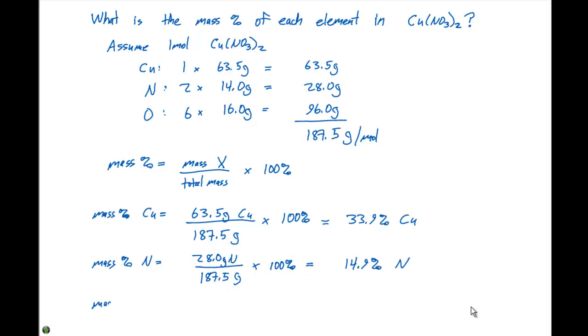The mass percent of oxygen is gonna equal 96.0 grams divided by 187.5 times 100%. This is gonna give us 51.2% oxygen.